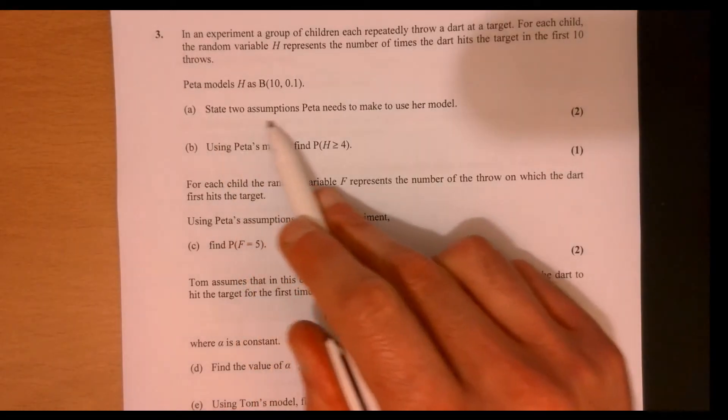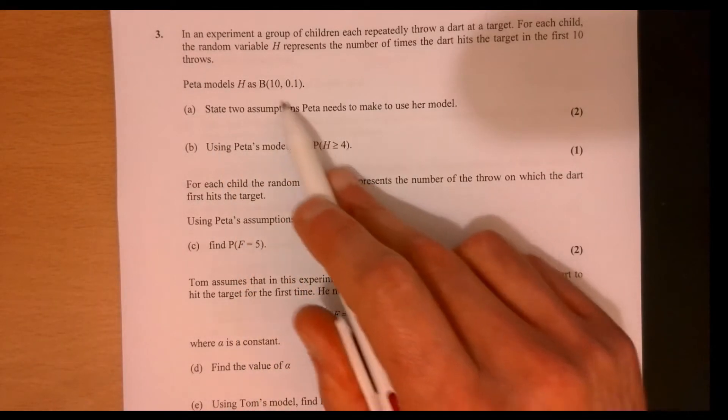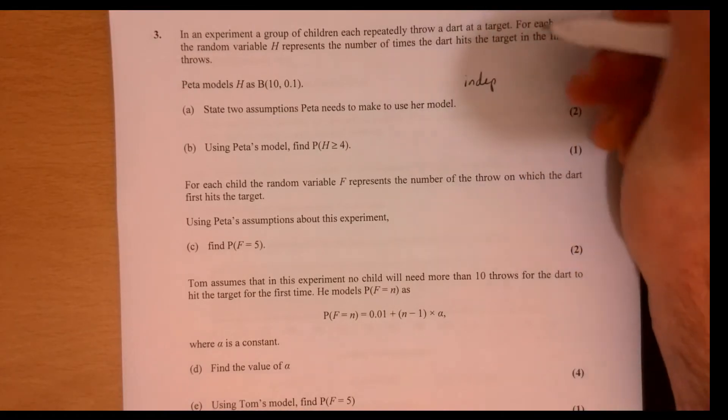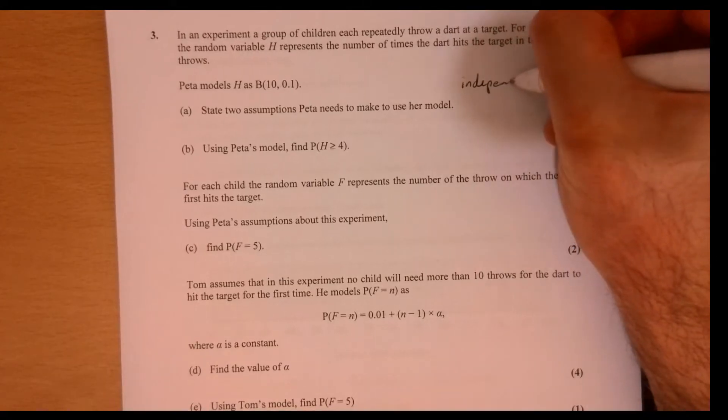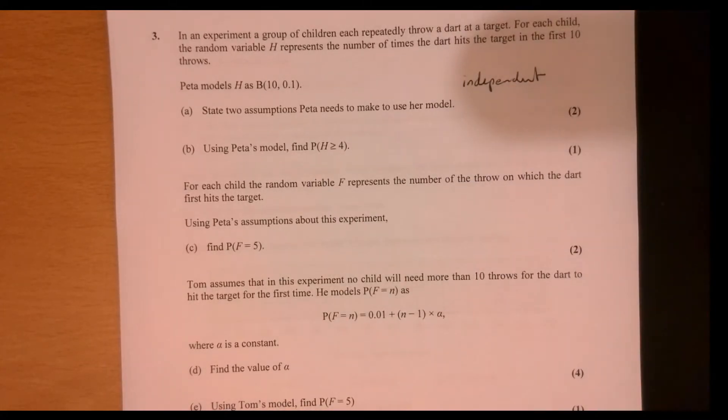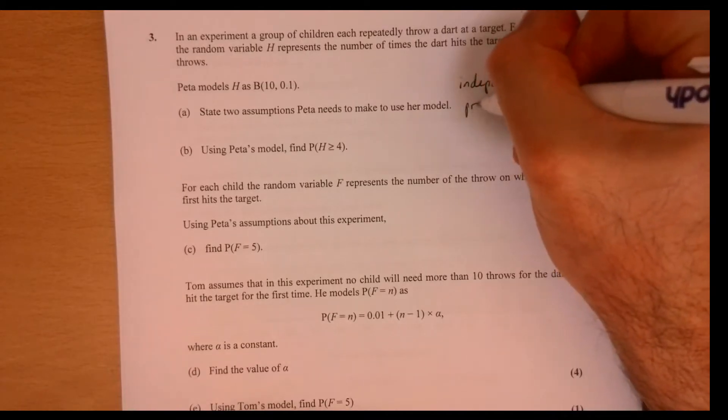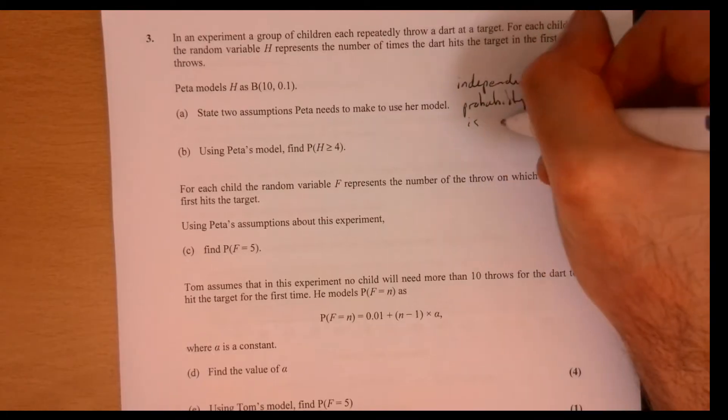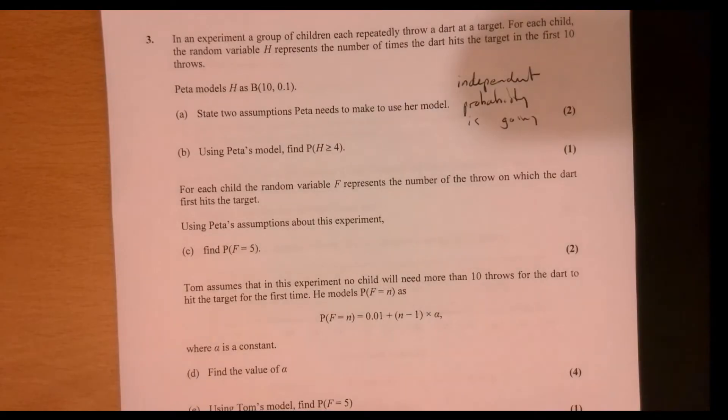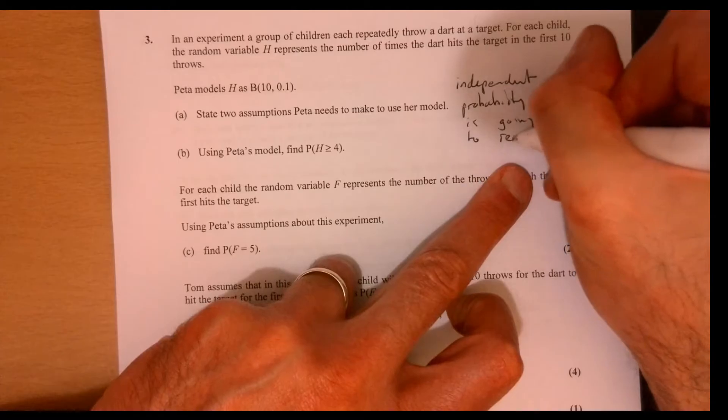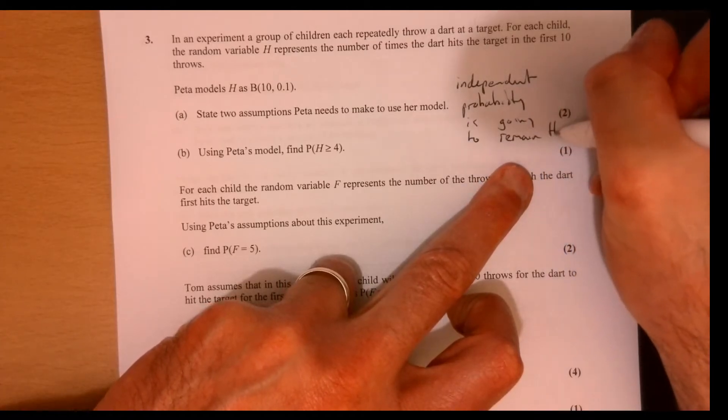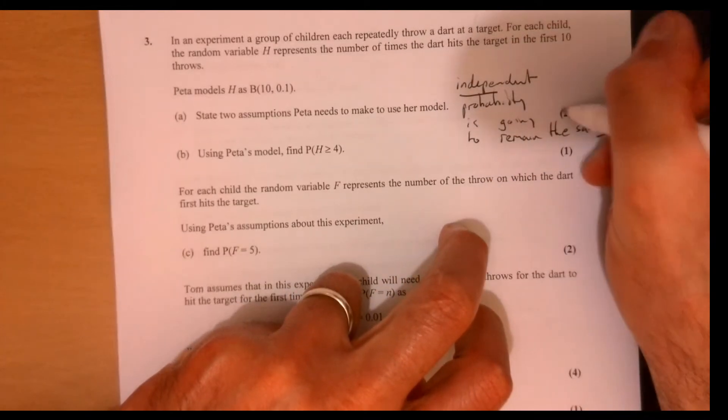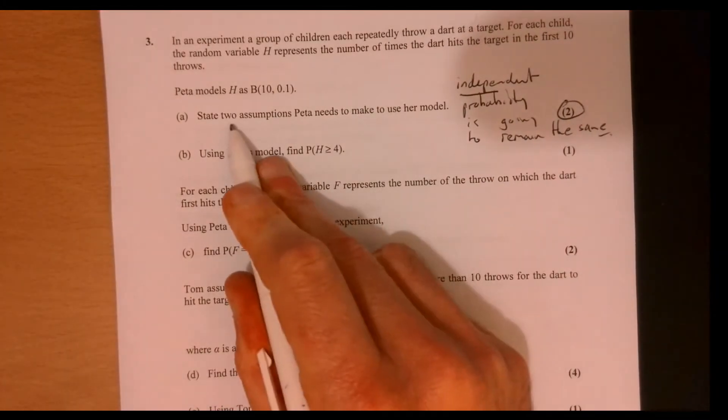Question three. So two assumptions required for a binomial model. Hopefully the most obvious thing to write down is that events are independent, and also the probability is going to remain the same. There we are. Got to say two things because it's two marks and it sets two assumptions.